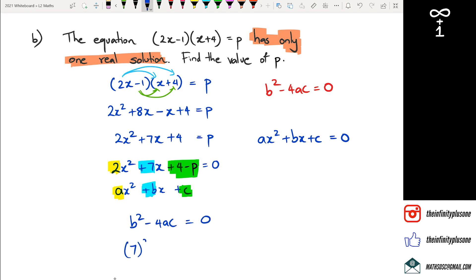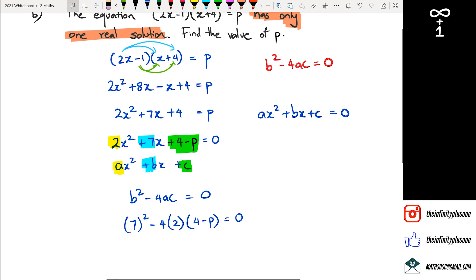Now b is 7, so it's 7 squared minus 4 times a, which happens to be 2, and c, which happens to be 4 minus p, and all of this is equal to 0. So 7 squared is 49. Then I've got minus 8, because 4 times 2 is 8. 4 minus p is equal to 0.